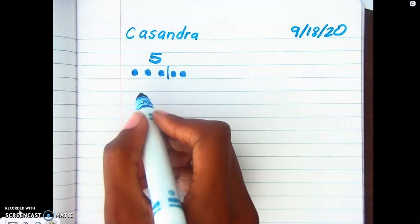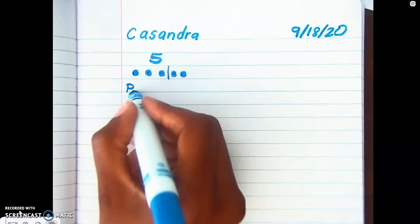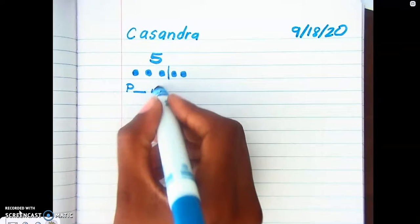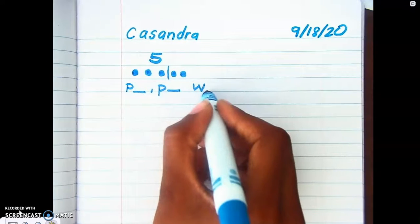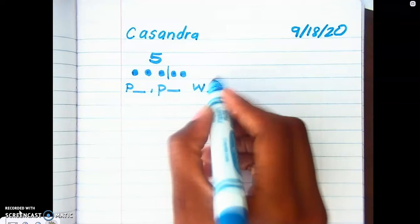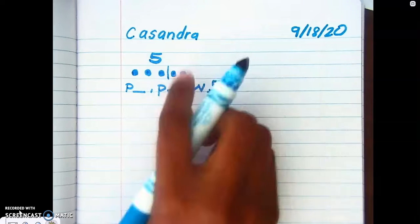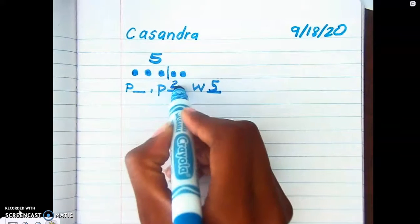So over here I want you to write what's your part, what's the other part, and what's the whole. The whole is always your biggest number, so my whole, my biggest number here is five. I'm gonna put that here. One of my parts, one two, is two, and the other part is one two three, three.